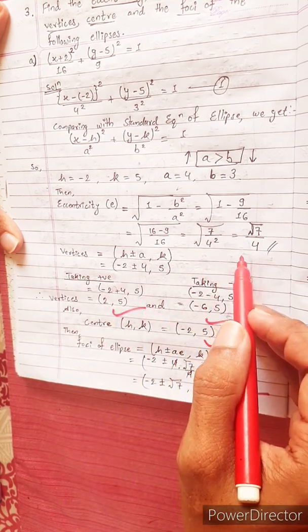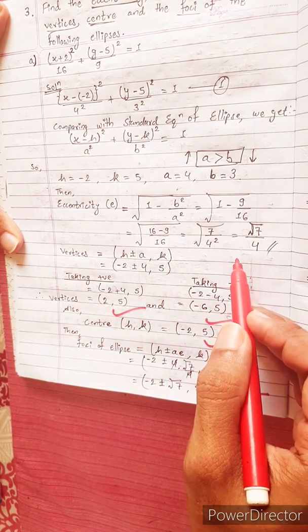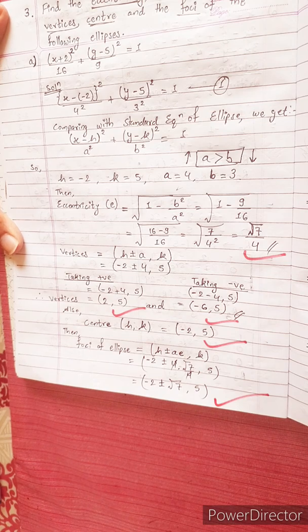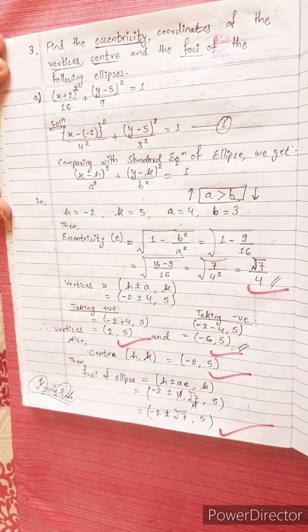This is the same result: under root 7, comma 5. Bye-bye, thank you.